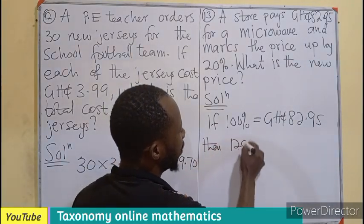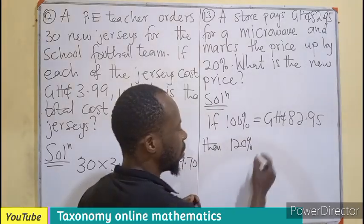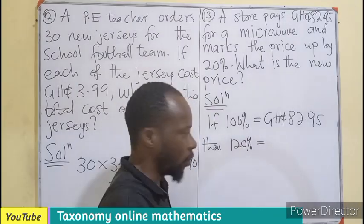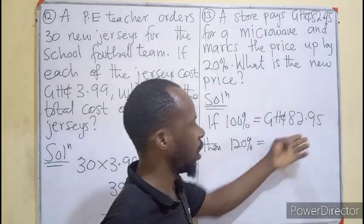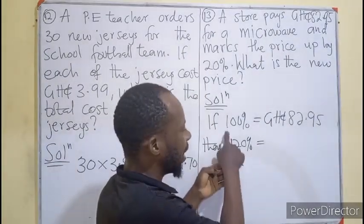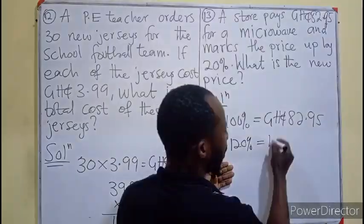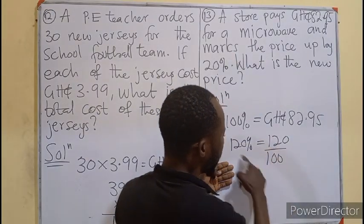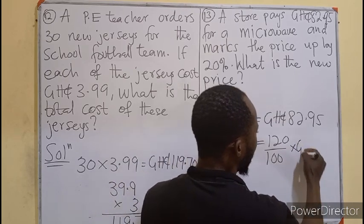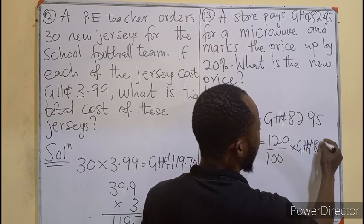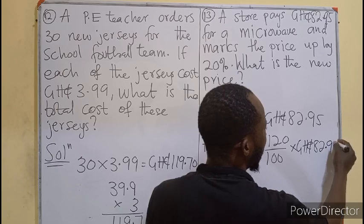That will be the new price of the article. Then we can say that 120% will have to give us more than the 82.95 cedis. If more, comparatively, less price divided. Meaning 120 divided by 100, we are using the less times the price that we have.